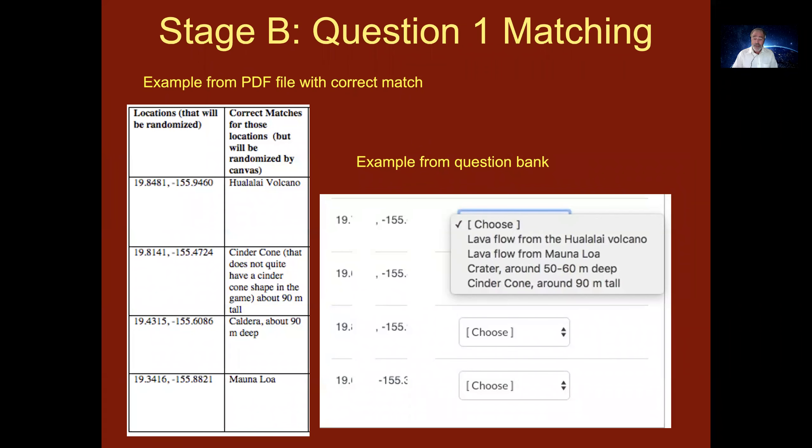So what is Stage B? Well, it's a matching question in which you're given randomized locations from a very large question bank. And you simply make a match for the feature that you see.